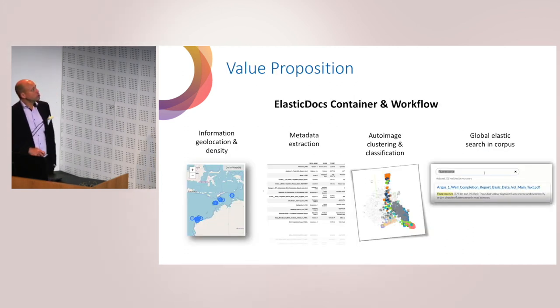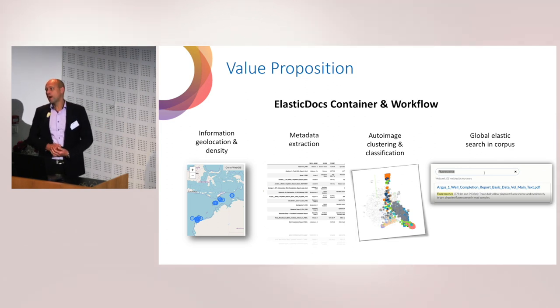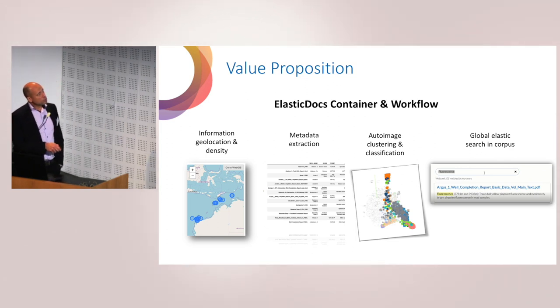So what can ElasticDocs do? There's really four things. We extract information about geolocation and how much data we have on each location. Then we have all the metadata extraction - Kelly Bushing, sea level, TD, things that any geologist or geophysicist would require from a well report. We pick out all the images in the report and classify them so you can compare between different reports. All that is put together in one container that you can then search in.